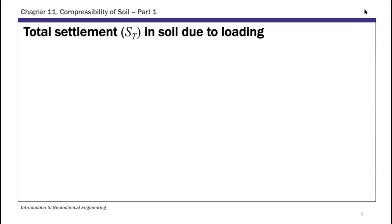Settlement and consolidation are strictly speaking two different things. Settlement in soil due to loading is actually made up of three components. If I call total settlement S_T, there are three components: S_E, S_C, and S_S. Those are the three components of total settlement in soil due to loading.